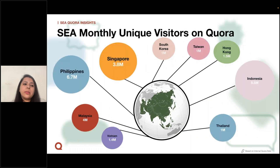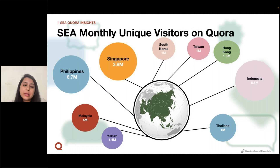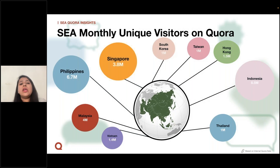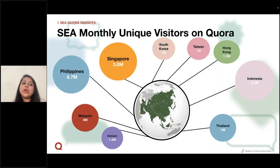Let us also look at a breakup for the Southeast Asia market. Indonesia contributes about 8.5 million of the audiences, Philippines 6.7 million, Malaysia about 4 million, and Singapore about 3.8 million. We also observe traffic from Taiwan, Hong Kong, South Korea, Vietnam, and Thailand, ranging anywhere between 1 to 1.5 million monthly unique visitors. That was about the audience landscape on Quora and how you can look at your targeting campaigns globally or region-specific.